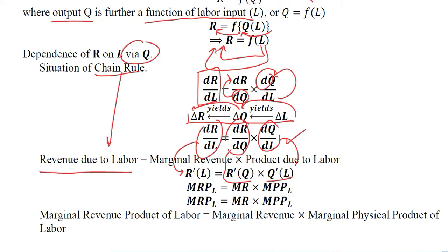Change in output due to labor is actually the marginal physical product of labor. That is how much output is produced once we employ an additional unit of labor. The word 'physical' makes it clear that we are talking about the quantity of the output, the number of the output, and not the monetary side of it.